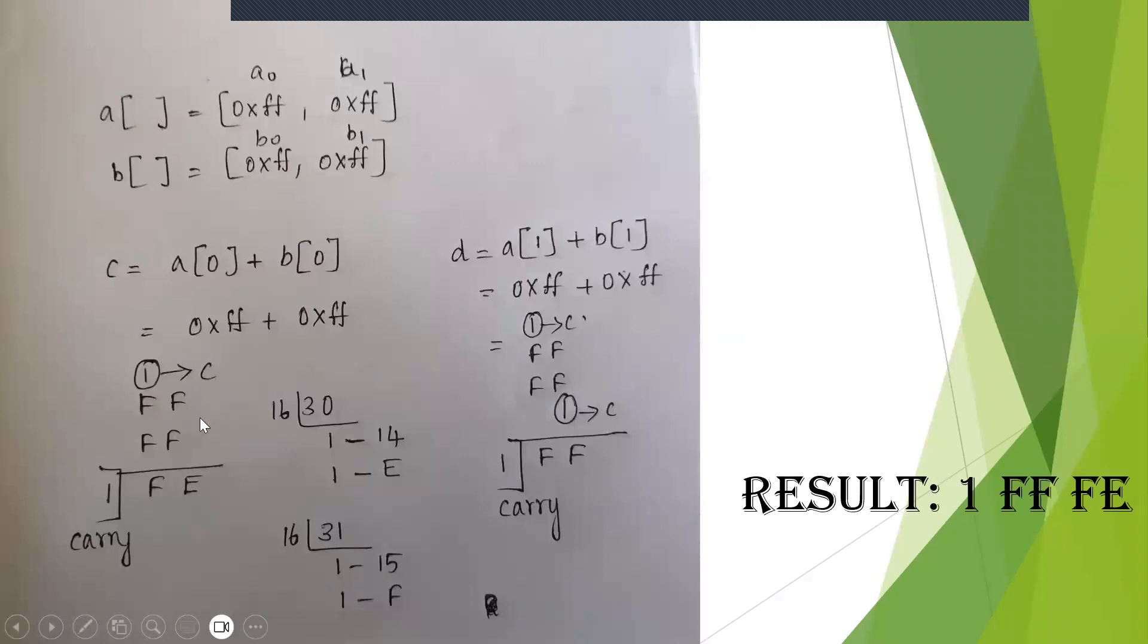...it into hexadecimal value. So divided by 16 one time, and remainder will be 14. So 1, 14 is nothing but E. So now here this is the carry bit, E will be stored here and 1 will be the carry bit. Now again F + F, that is 30. 30 + 1 is 31.